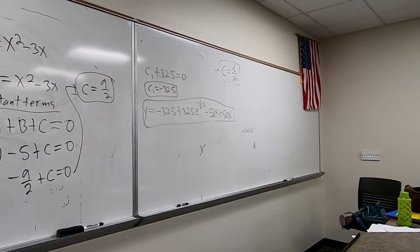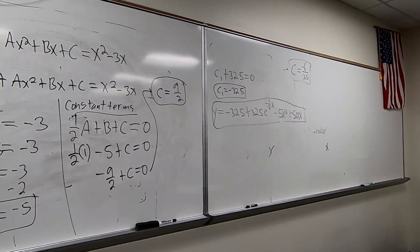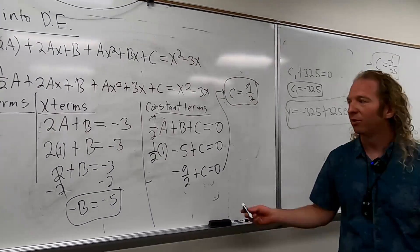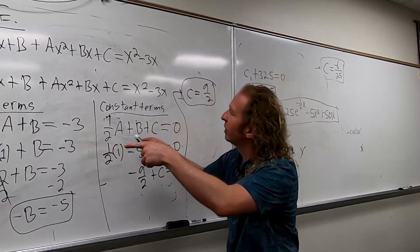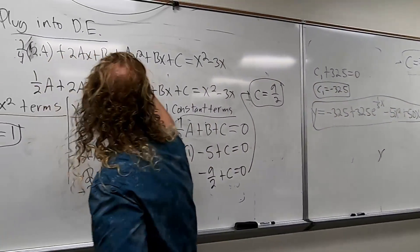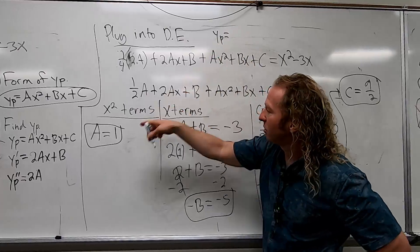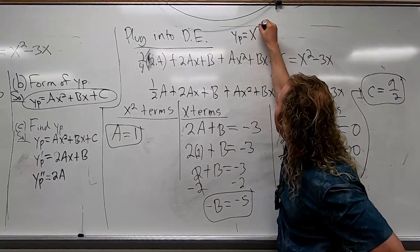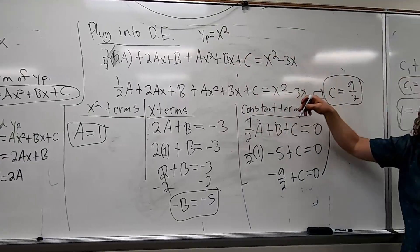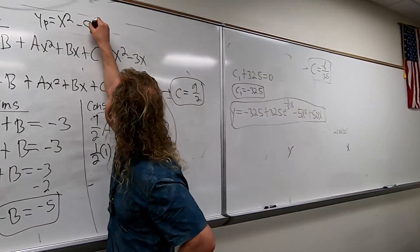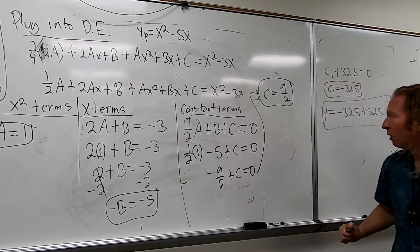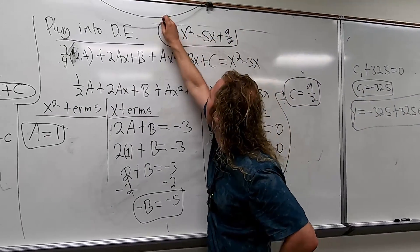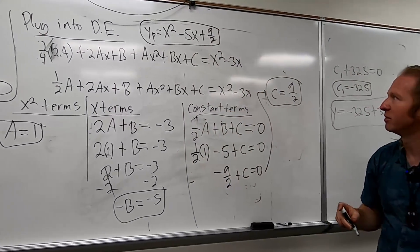We're not done, though, for part C. What do we have to do with these now? Plug them into what? Into YP. Yeah, so you plug them into YP, which is over here. So I'll do it up here. So the answer would be YP equals A. Oh, it's here. A is one, so X squared. B was negative five, so negative five X. And then C was nine halves, so nine halves. This looks really familiar, this problem. I think maybe it's been on a test or something. The nine halves is reminiscent of a test.